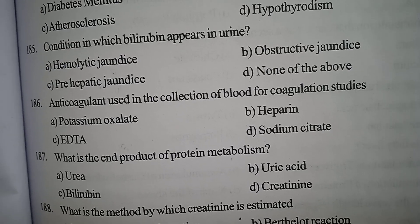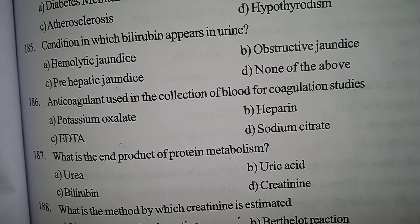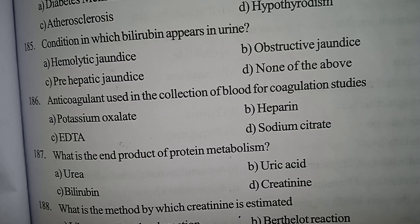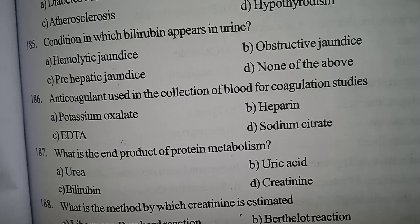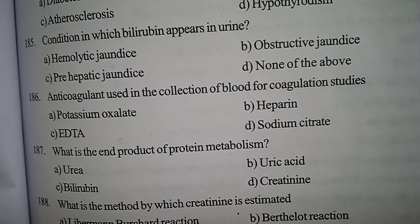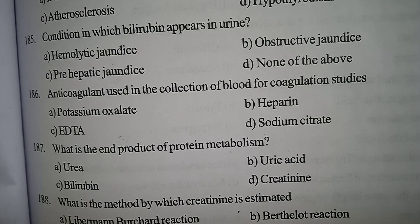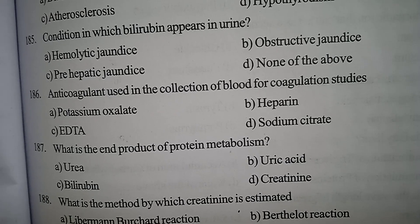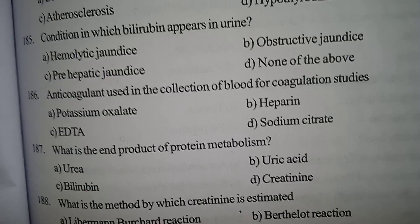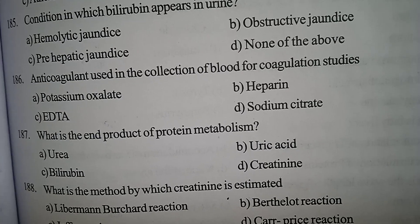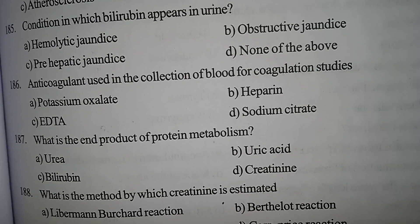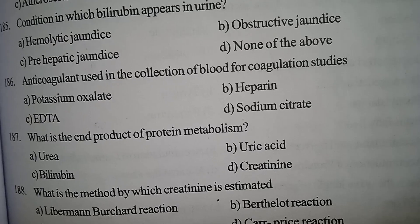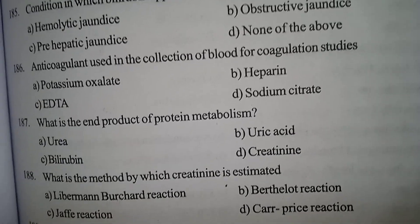Correct answer: Option A — Urea. The end product of protein metabolism is urea. Uric acid is the end product of purine metabolism, and bilirubin is derived from red blood cells.